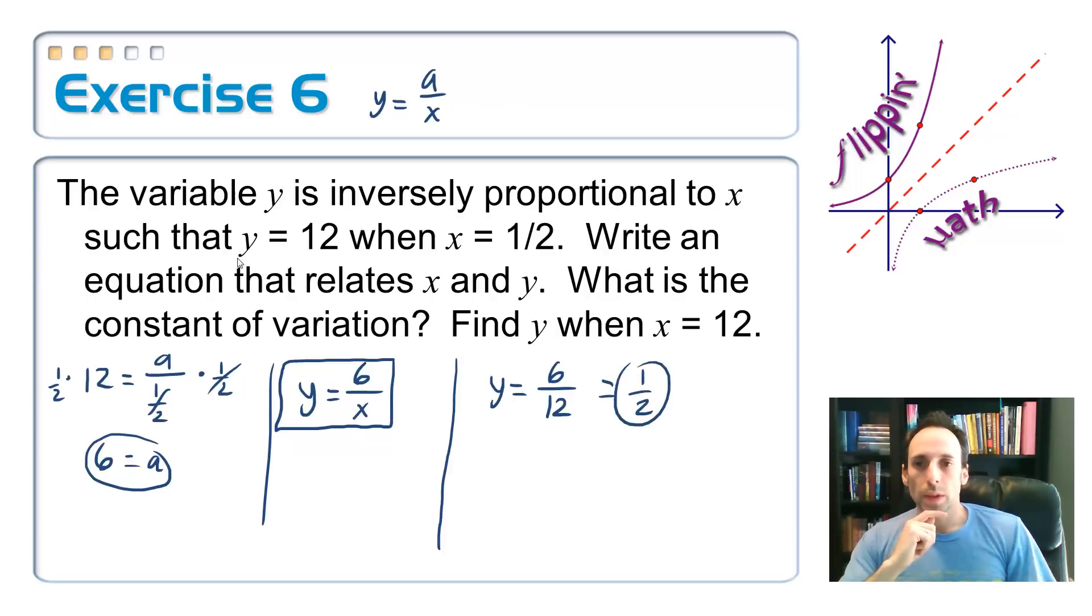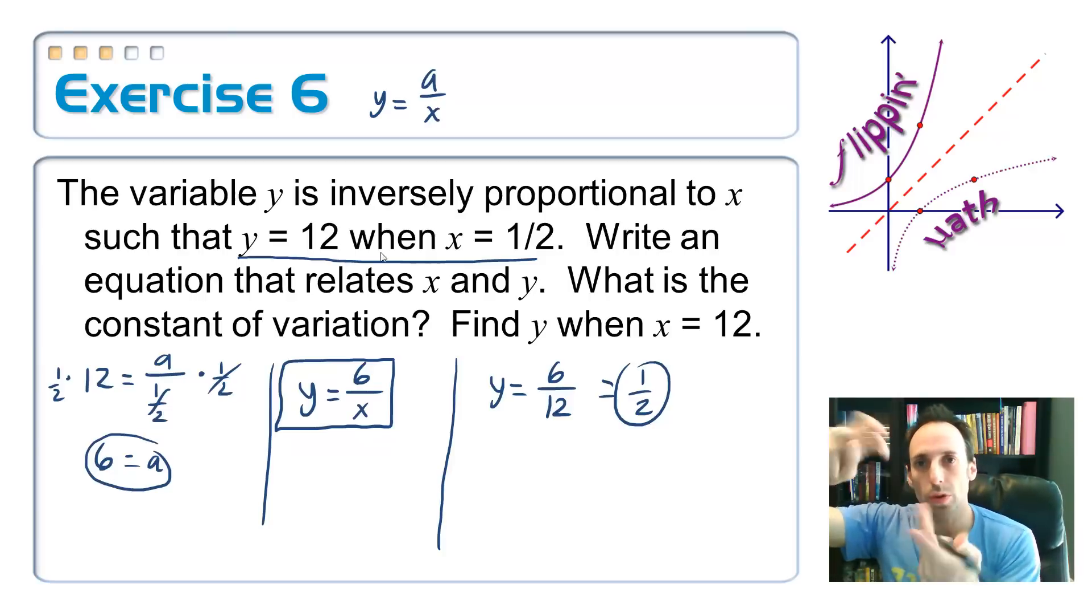Look at that. Back at the very beginning, y was 12, x is a half. And then, if x is 12, y is a half. They both switch out. Crazy.